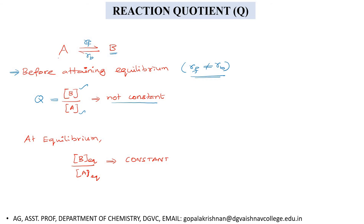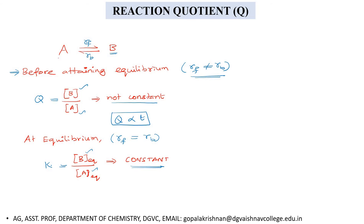The reaction quotient Q depends on time; as time progresses, the Q value keeps changing. Once the reaction attains equilibrium, the rate of the forward and rate of the backward will be equal. At equilibrium, the equilibrium concentration of B divided by the equilibrium concentration of A becomes a constant. This constant is what we call the equilibrium constant K.